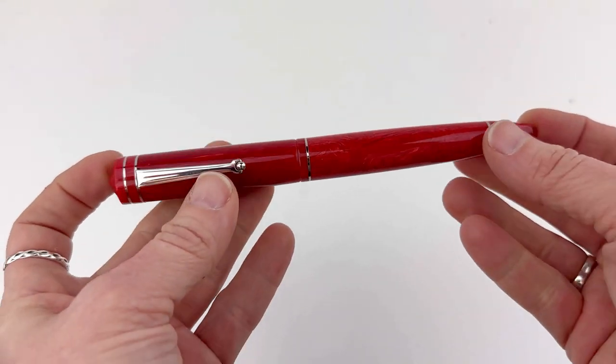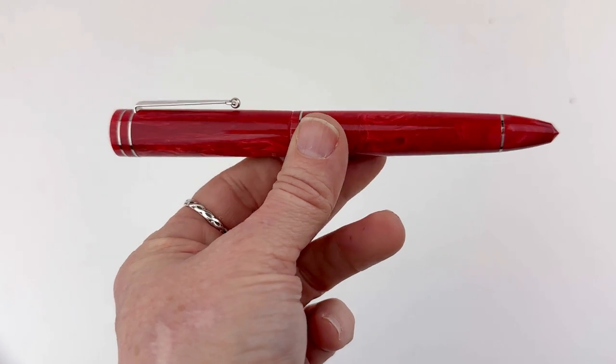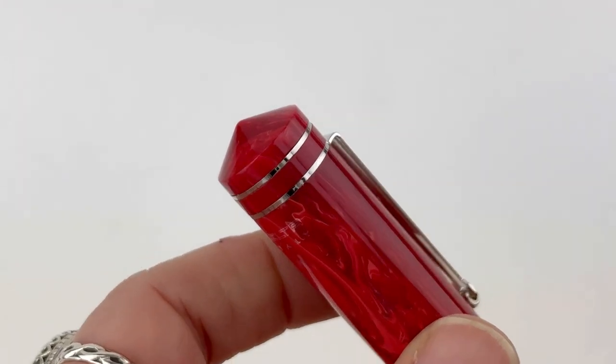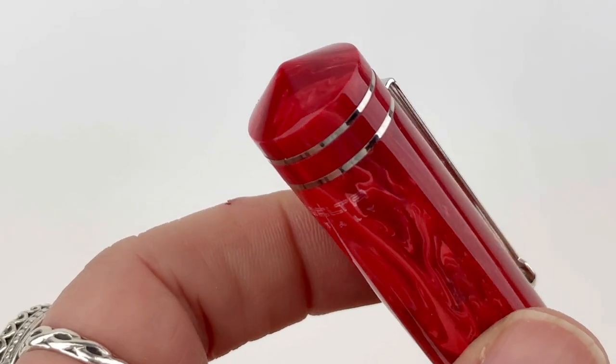The Delta Right Balance fountain pen is currently available in three colors. This is the red, but it's also available in green and purple that you really should go look at.